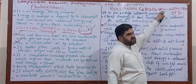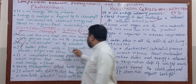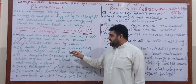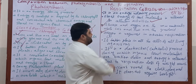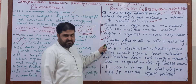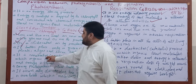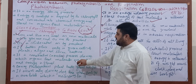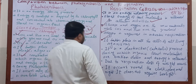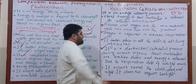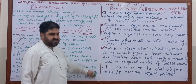Photosynthesis takes place only in green cells of plants, algae, and some bacteria. Respiration takes place in all cells of living organisms. Photosynthesis is a constructive anabolic process during which organic food molecules are synthesized and energy is stored; respiration is a destructive catabolic process during which organic molecules are broken down and energy is released.